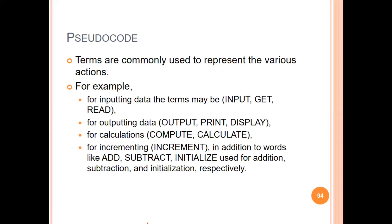We also need input data — inputs are given and output data is produced. For keywords and terms: data input uses keywords like INPUT or GET. Output uses keywords like OUTPUT, PRINT, or DISPLAY. For calculations, we can compute values, increment values, and assign a value to a variable — for example, A equals 1 to initialize. We can also add, subtract, and initialize values.